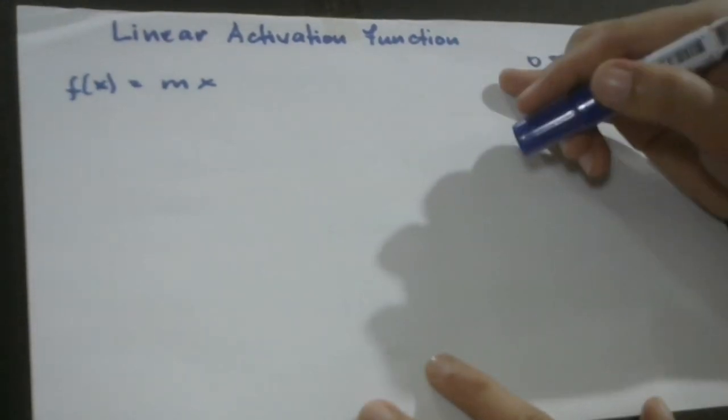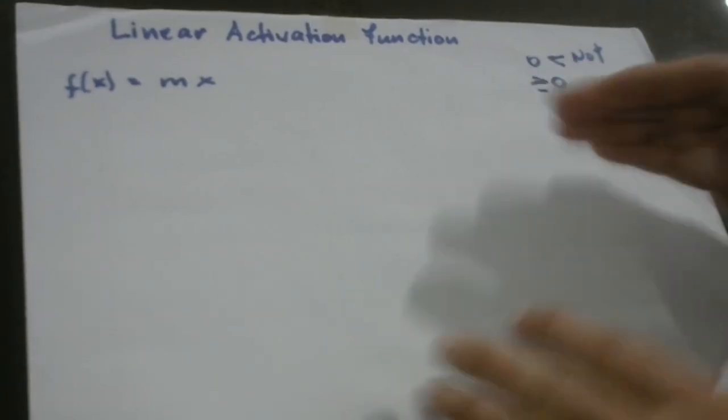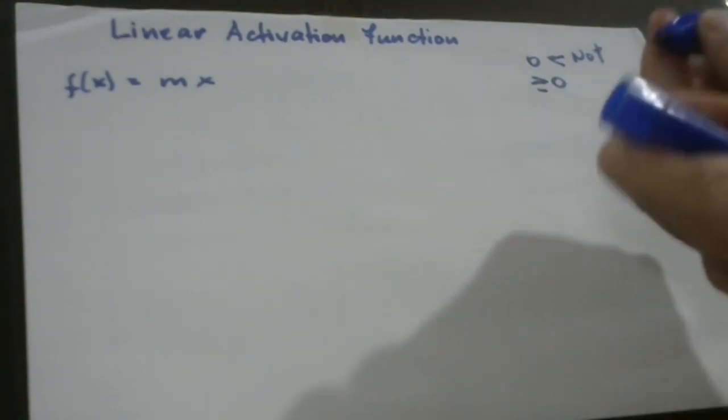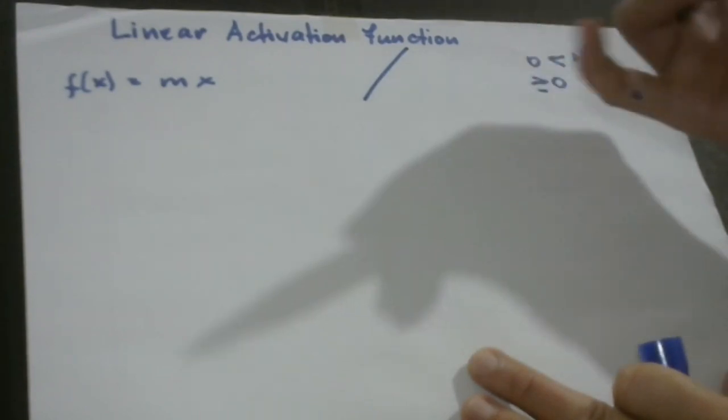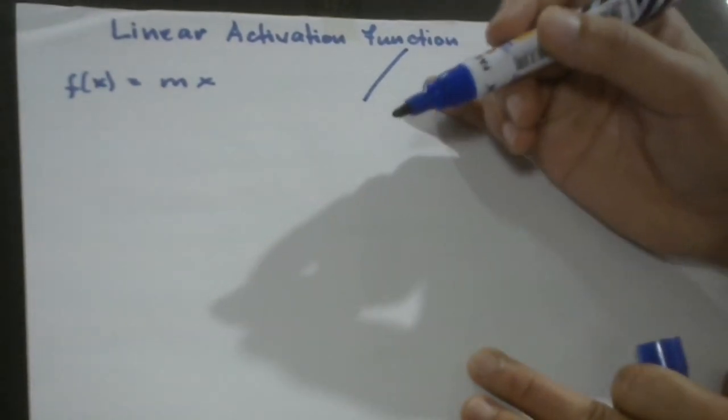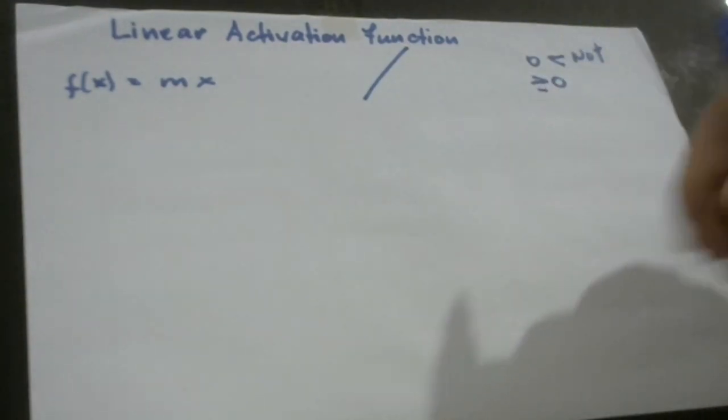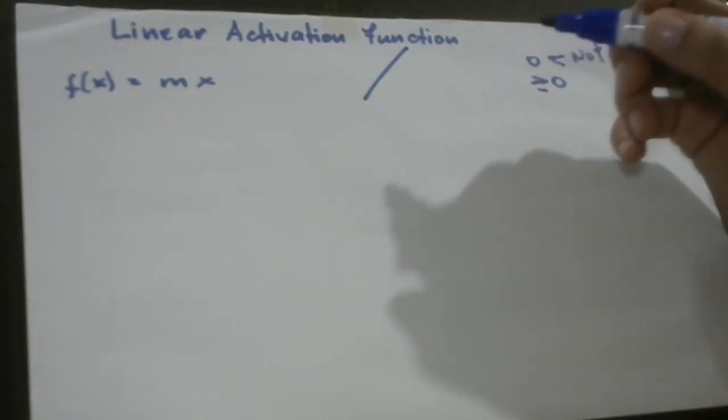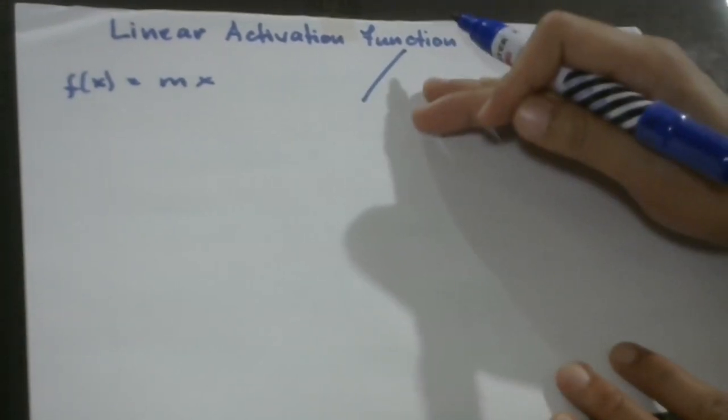A linear activation function is actually a simpler case. What makes this one simpler is that it's just a straight line, just like your regression algorithm. This produces a straight line because of this very simple reason: the function is directly proportional to the weighted sum of the neurons.